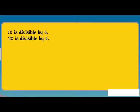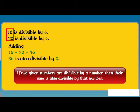The numbers 16 and 20 are both divisible by 4. The number 16 plus 20 is equal to 36 is also divisible by 4. If two given numbers are divisible by a number, then their sum is also divisible by that number.